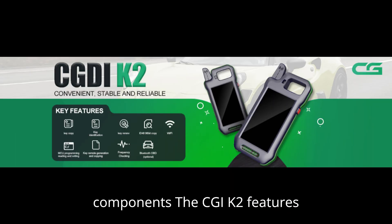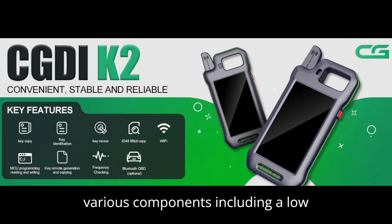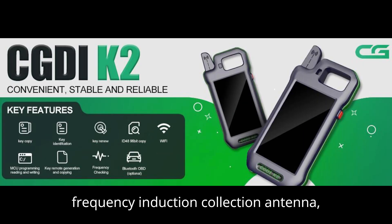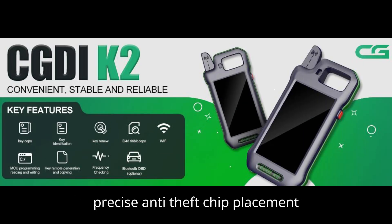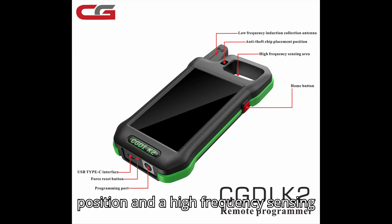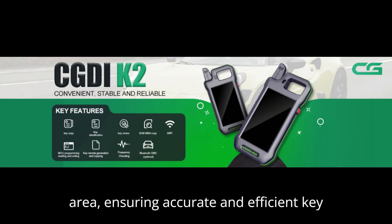Display Components: the CGDIK2 features various components, including a low-frequency induction collection antenna, precise anti-theft chip placement position, and a high-frequency sensing area, ensuring accurate and efficient key programming.